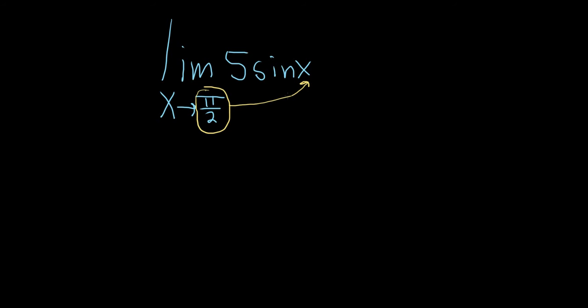If you get an answer, then you're done. If you don't get an answer, then you should try something else. So in this case, we can simply replace x with pi over 2. That'll give us 5 times the sine of pi over 2.